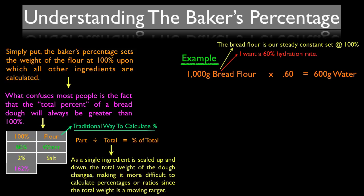The same thing applies to all other ingredients. When I want to calculate my salt content and I want a 2% salt content based on the baker's percentage—and as a side note, salt content in most bread doughs ranges from 1% on the low side to about 3% on the high side—I take my 1,000 grams of bread flour, multiply by 2% or 0.02, which gives me 20 grams of salt, or 2% of 1,000 grams.